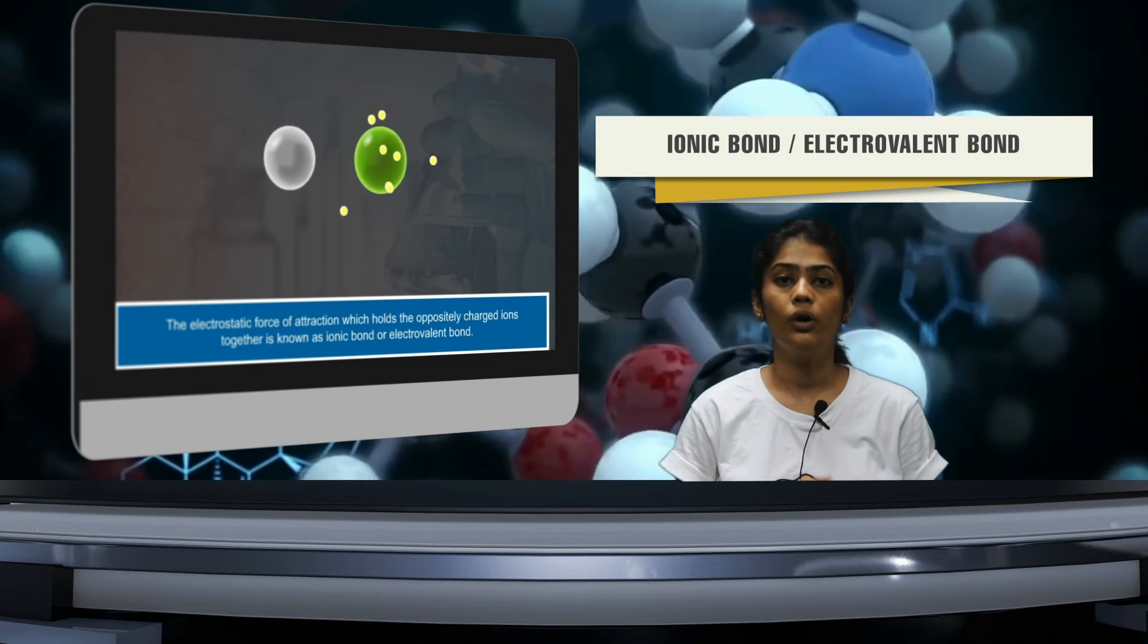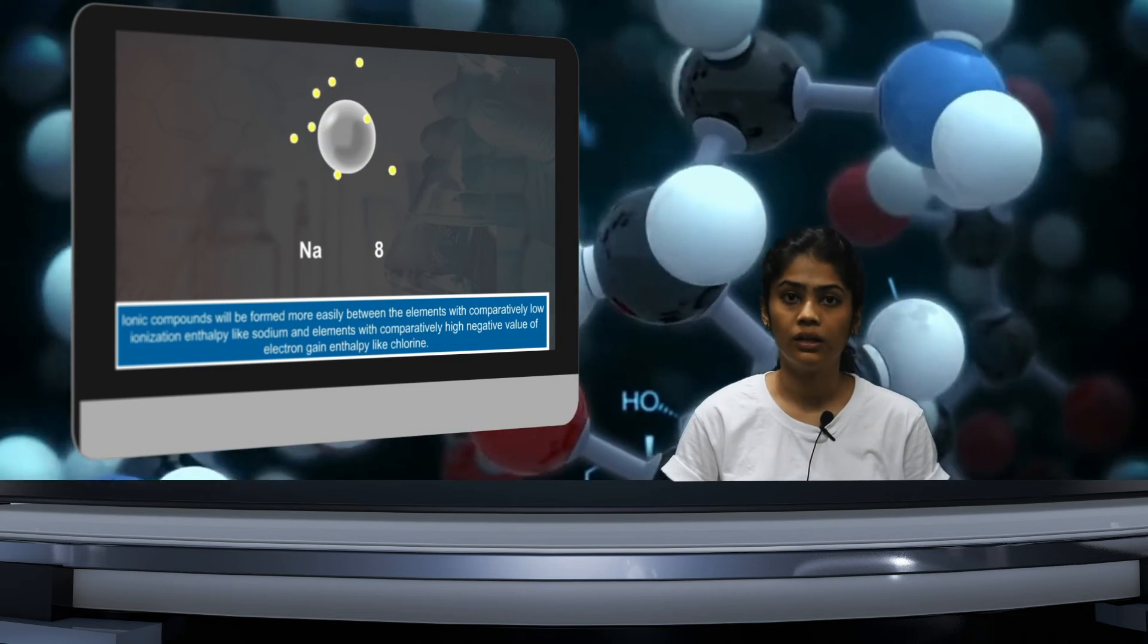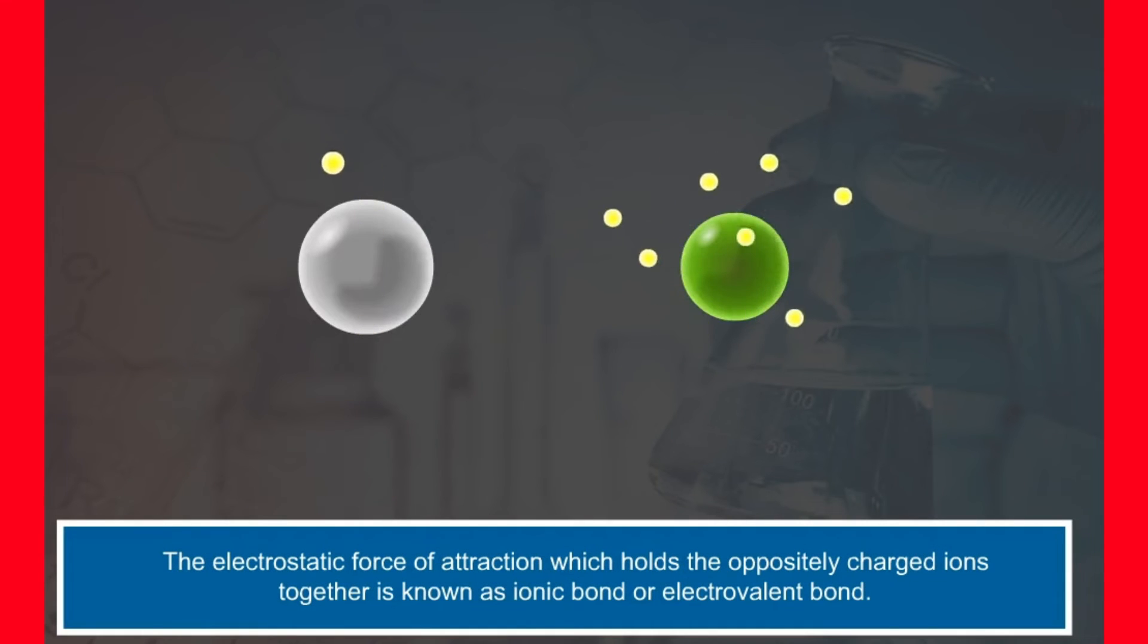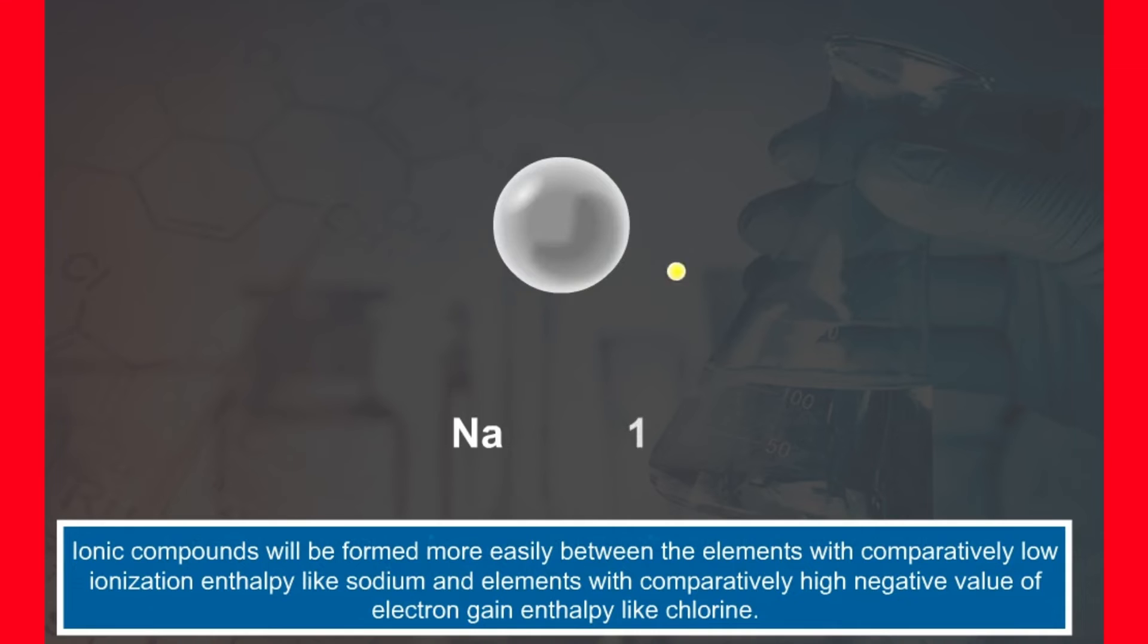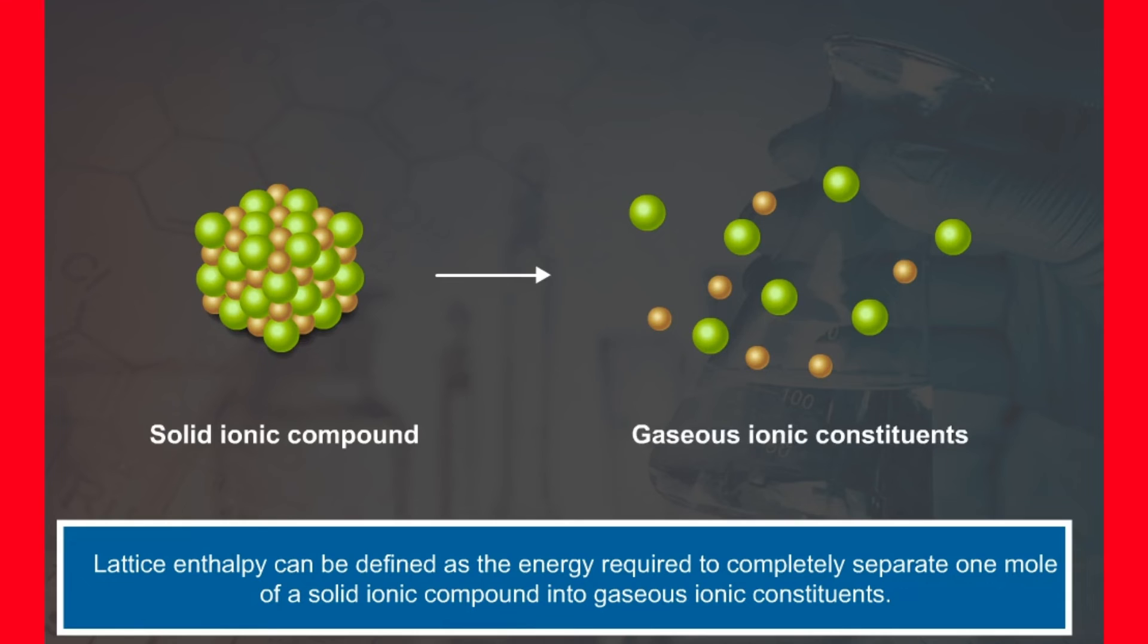Till now we have studied about one bond, that is covalent bond. Now we will be studying about two important bonds, first being the ionic bond and the second being the electrovalent bond. Both are similar names for one type of bond. Ionic bond or electrovalent bond: The electrostatic force of attraction which holds the oppositely charged ions together is known as ionic bond or electrovalent bond. Ionic compounds will be formed more easily between the elements with comparatively low ionization enthalpy like sodium and elements with comparatively high negative value of electron gain enthalpy like chlorine. A quantitative measure of the stability of an ionic compound is provided by its lattice enthalpy. Lattice enthalpy can be defined as the energy required to completely separate one mole of a solid ionic compound into gaseous ionic constituents.